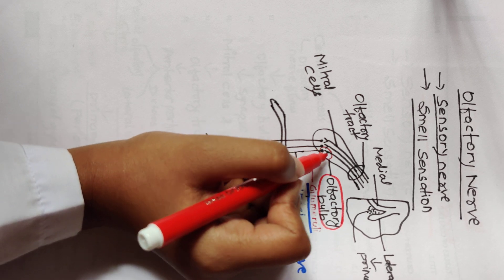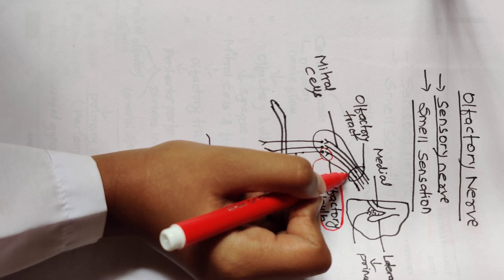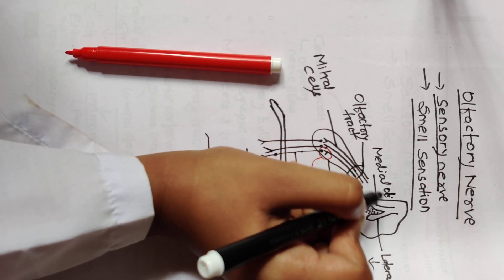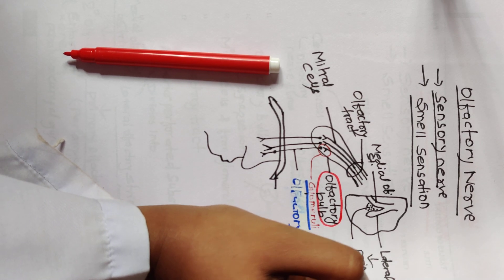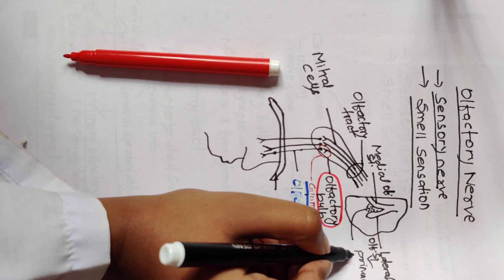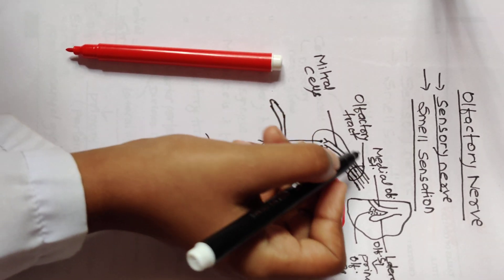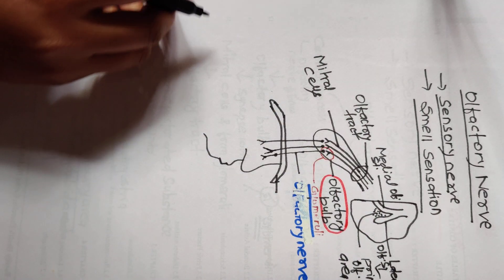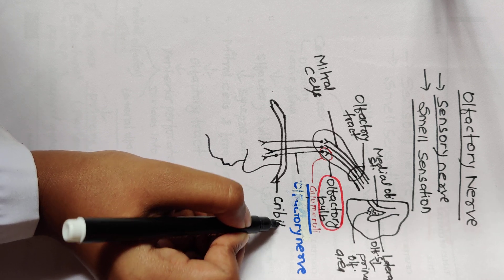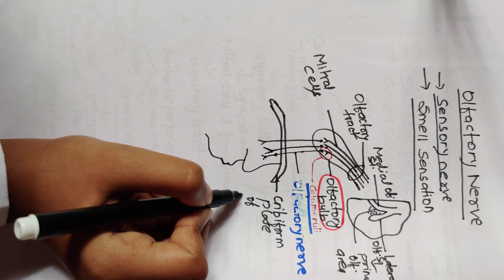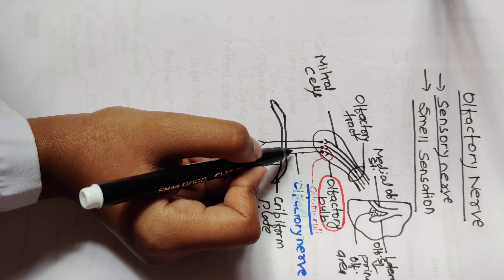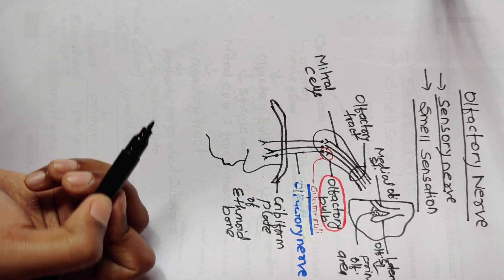From the olfactory bulb, the olfactory tract reaches the cerebral cortex, where it forms the medial olfactory stria and lateral olfactory stria, as already discussed. The lateral stria reaches the primary olfactory area and the medial goes into the secondary olfactory area. You can see in the figure: it arises from the nasal area, crosses the cribriform plate of the ethmoid bone, and the olfactory nerve reaches the olfactory bulb. This concludes the overview of the olfactory nerve.